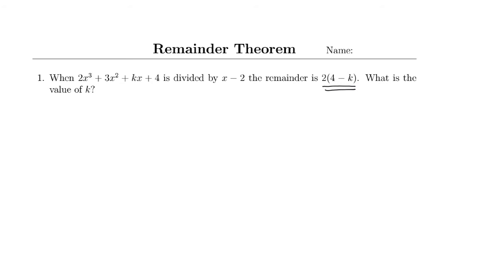We're going to approach this the same way we would any other remainder theorem question. When I'm dividing by x - 2, I take my polynomial and plug in positive 2. I'm picking the number that makes that divisor equal to 0. If I plug that in, that equals the remainder, which in this case is 2(4 - k).